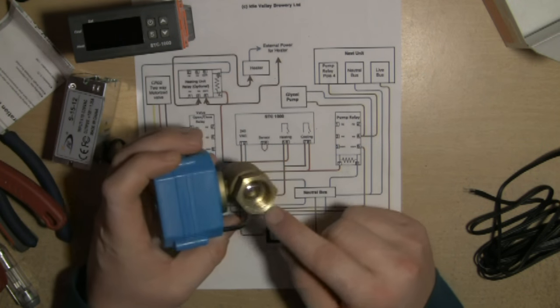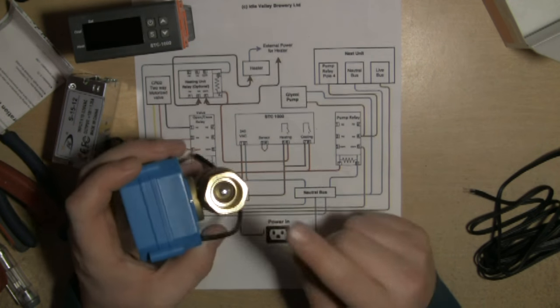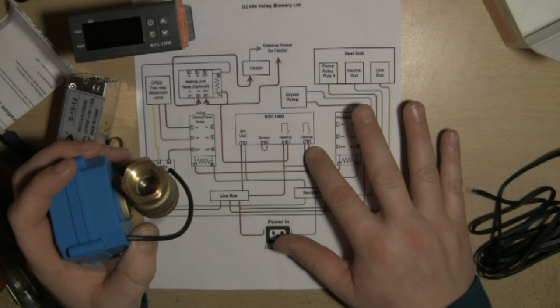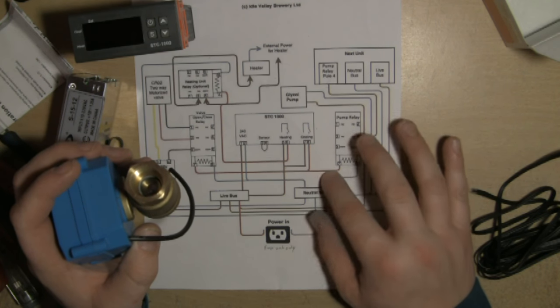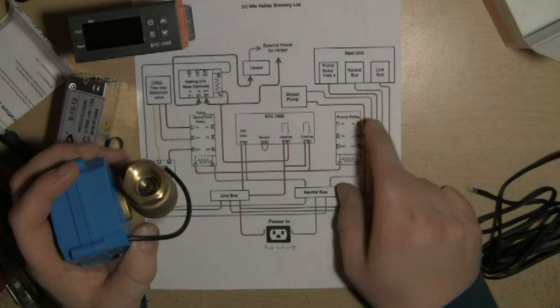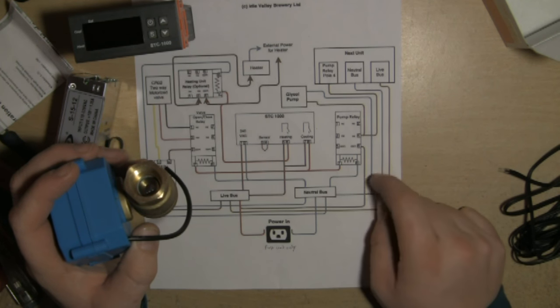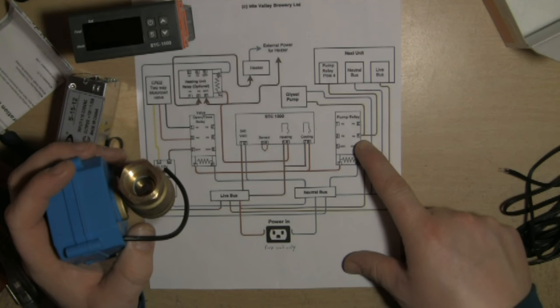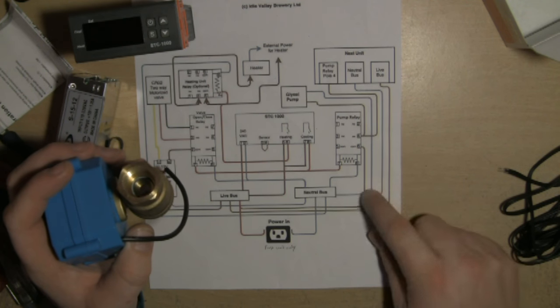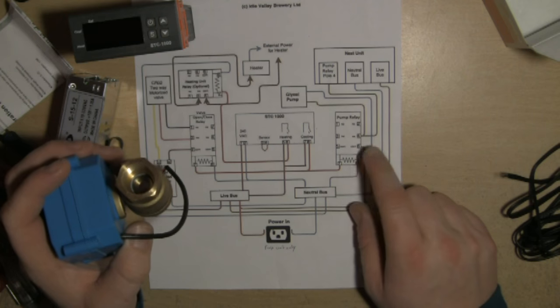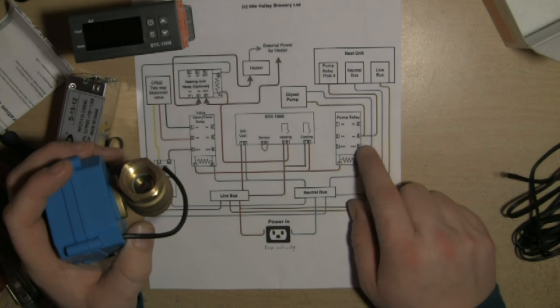The idea is that you also use the power out from the cooling relay to activate the pump relay, which is the glycol pump relay. Then that will allow your live power because all you're going to do is just break the live feed to the glycol pump.